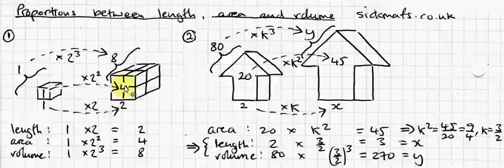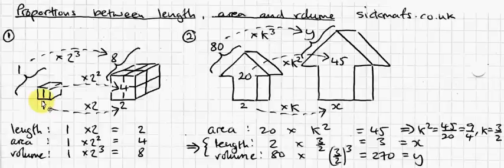If you've got two similar objects, like these two cubes, and you can work out the scale factor between the lengths. So, this width is one, and this width is two, therefore the scale factor is two. Okay?